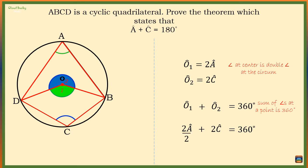Dividing through by two, we get angle A plus angle C equals 180 degrees. So angle A plus angle C will always equal 180 degrees in a cyclic quadrilateral.